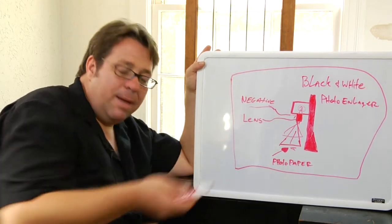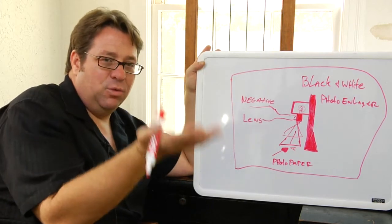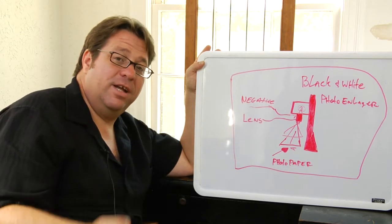On that paper is an emulsion. That emulsion is actually absorbing the light and making a latent image of the image that's on your negative.